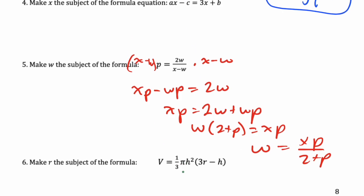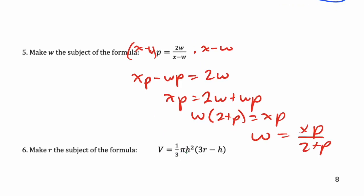And this last one here looks like some sort of volume formula. We got a fraction, we got one-third, so I'm going to start by multiplying by 3 and then we get 3V equals πh. Now I'm going to expand the brackets, but you could do it another way.